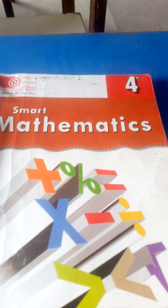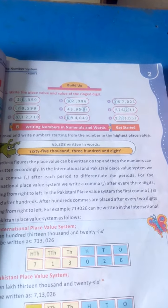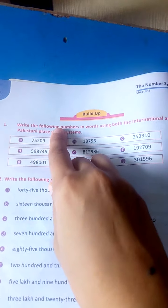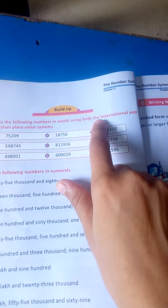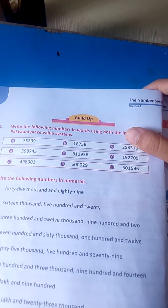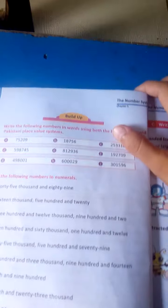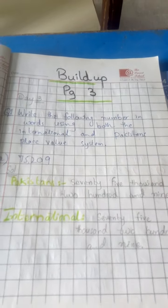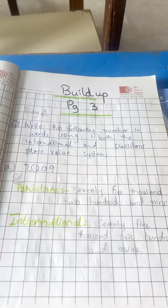Assalamu alaikum Grade 4, hope you all are fine. This is your maths textbook — open it now. In the previous video (video number one) we solved this exercise in our CW copy. Now it's time for exercise number two, page number three: 'Build Up — write the following numbers in words using both the International and Pakistani place value system.' We are solving page number three in our CW copy like this.